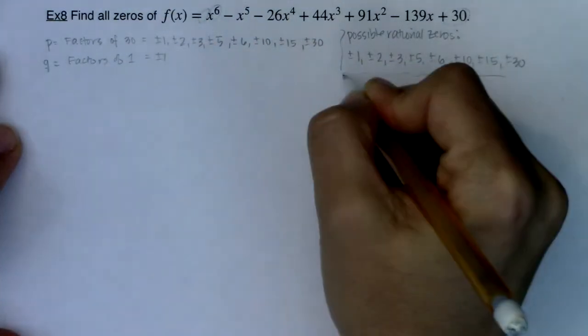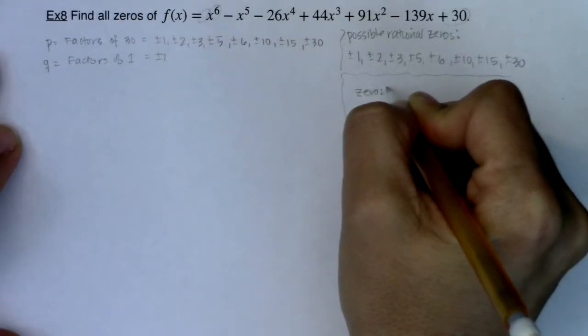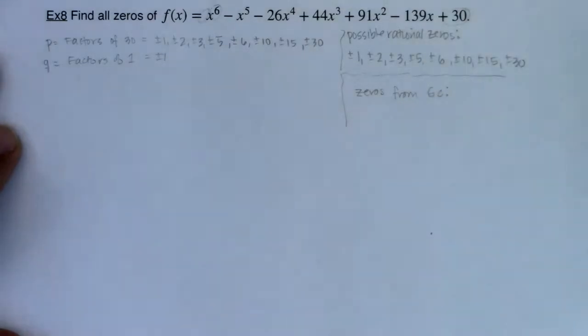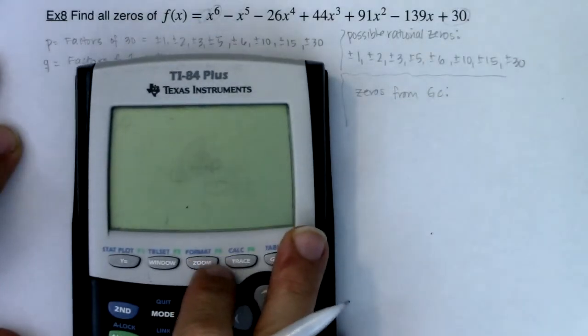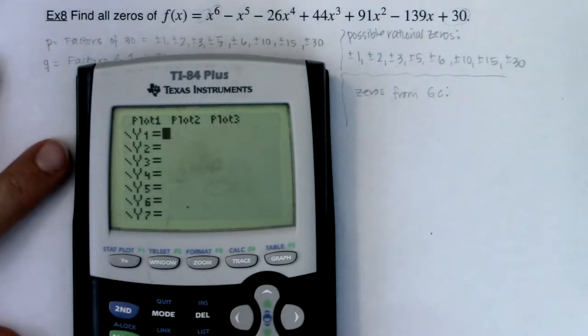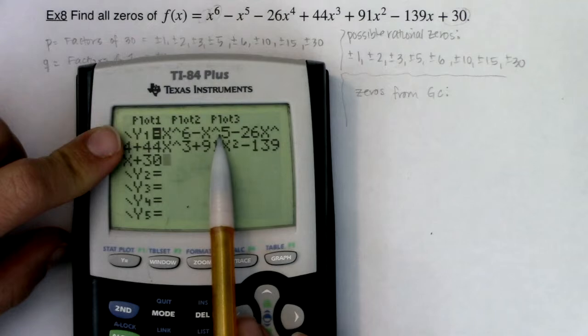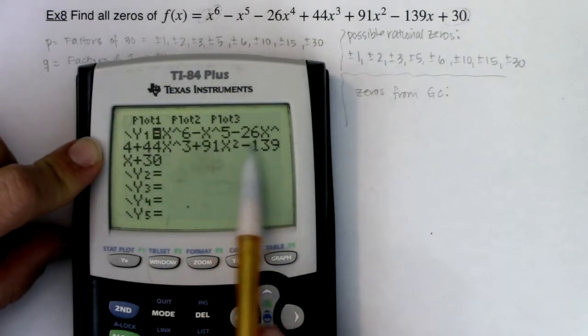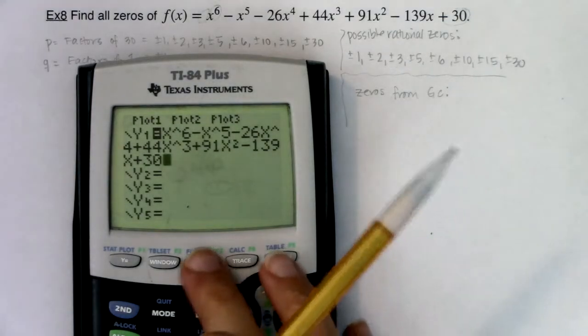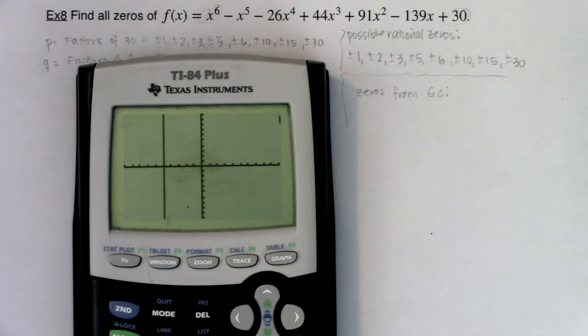Let's go to our graphing calculators and see how many zeros we get. I've got to get this function into my y equals. We've got x to the sixth minus x to the fifth minus 26x to the fourth plus 44x cubed plus 91x squared minus 139x plus 30. Let's hit zoom six and see what pops up. And I could have up to six x-intercepts. There's one, two, three, four, five, six.